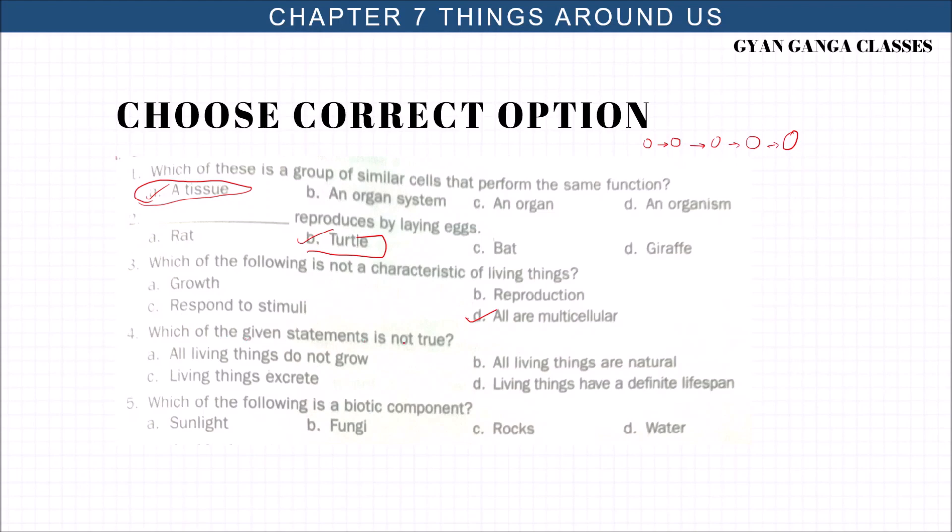Which of the given statements is not true? Living things do not grow. Living things are natural. Living things excrete. Living things have a definite lifespan. A is not true - do not grow. We all grow. Then which of the following is a biotic component? Sunlight, fungi, rock, water. Biotic components are living things. Abiotic components are the non-living things. So the answer is fungi.